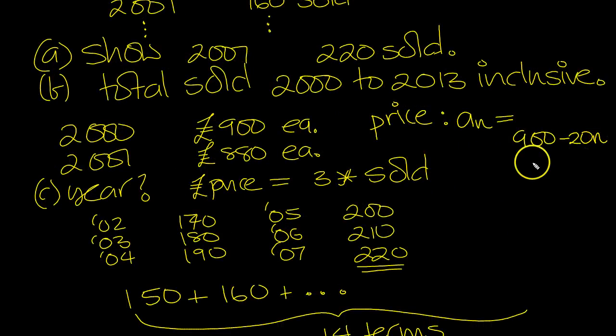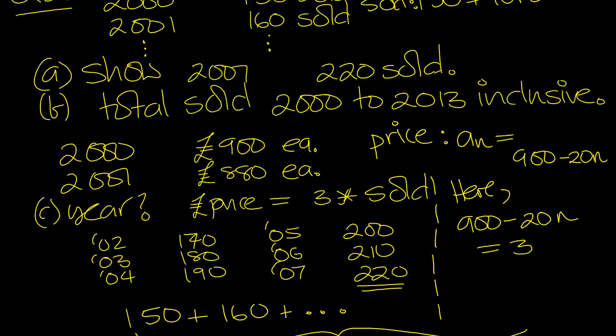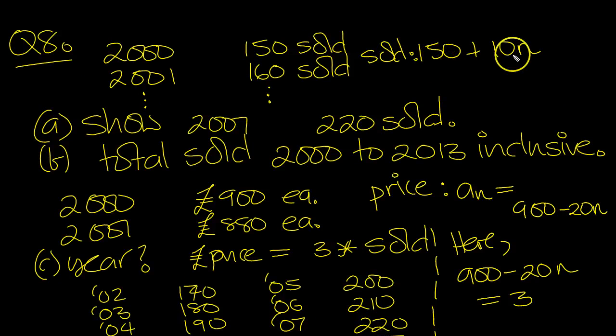So part C, I'll put it in here to save room. So you've got the price, 900 minus 20N, is equal to three times the amount sold. And the amount sold was 150 plus 10N.